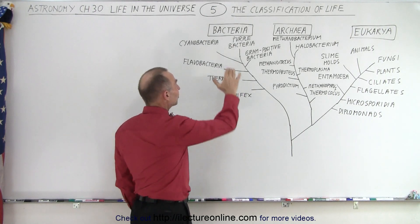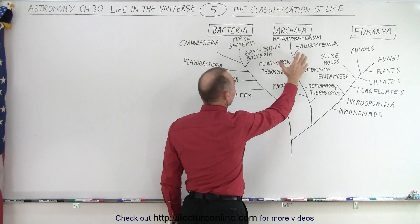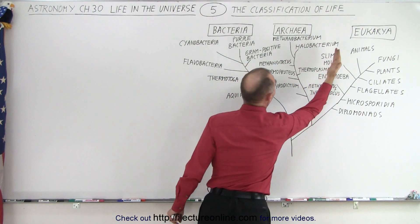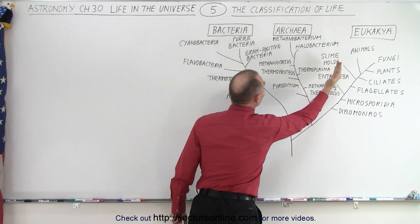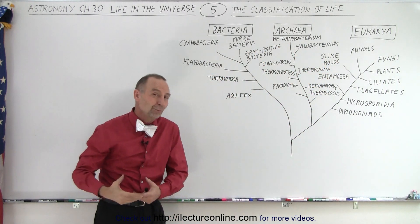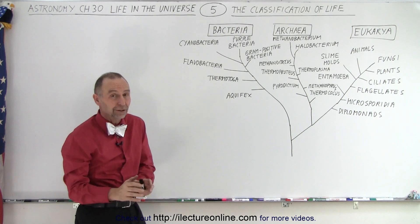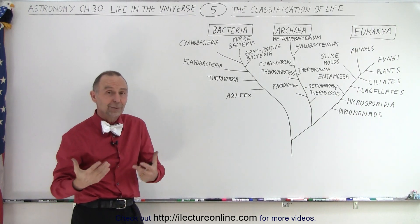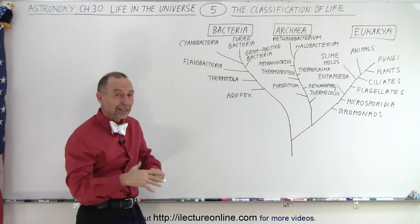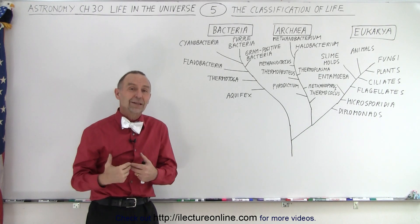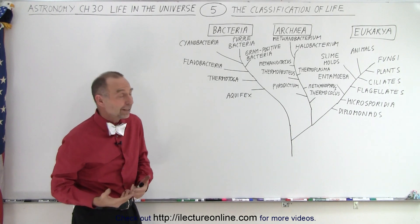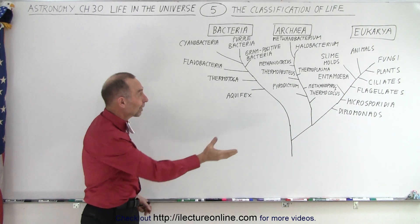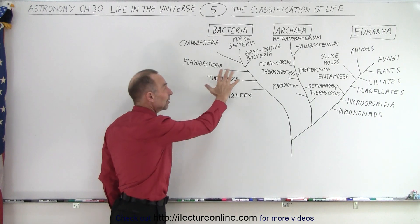The other two branches are the bacteria and the archaea. There is a lot of similarity between those two groups — all of these are very primitive, one-celled structures. Bacteria, of course, most of us are familiar with. Bacteria can be divided into good and bad bacteria. In our bodies, we have good bacteria that we need and depend on, and of course there's bad bacteria that can kill us.